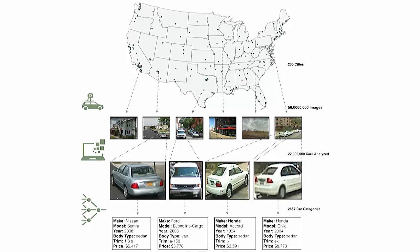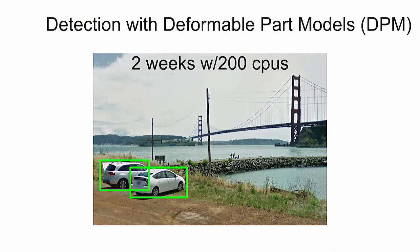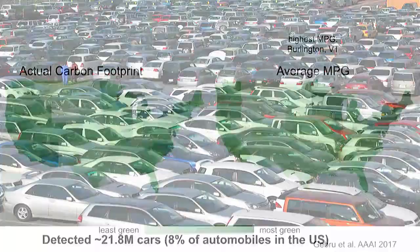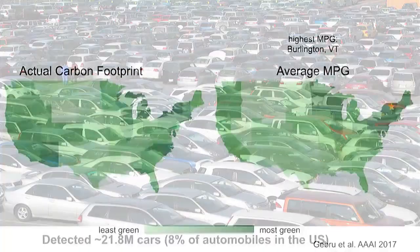Here's an overview of our pipeline. We built a crawler to crawl 200 of the most populous cities in the US and get 50 million Google Street View images. Then we built a crowdsourcing pipeline to build a visual dataset of cars. Then we built a fine-grained image recognition pipeline to recognize all the cars in the Street View images. We first localized cars using a deformable parts model — this was done in two weeks using 200 CPUs — and then we classified cars into one of 2,600 types using convolutional neural networks. We analyzed about 8% of the automobiles in the US.